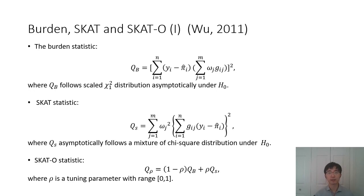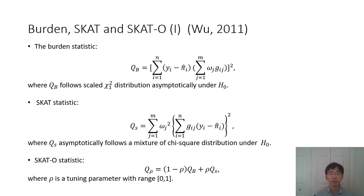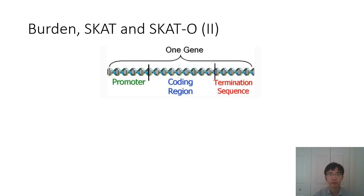Here I will introduce Burden, SKAT, and SKAT-O statistics. The Burden statistic essentially aggregates all the variants with a weight function, because it assumes that the directions of all variants are the same in this gene. However, SKAT does not require this assumption — it takes a square for all variants and then multiplies by the weight function. SKAT can do better if all the variants in this region have very different directions. SKAT-O is essentially a linear combination between Burden and SKAT.